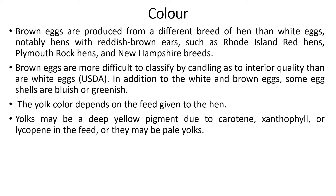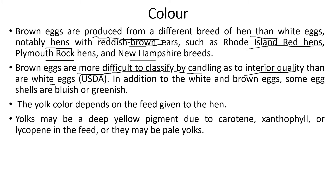Brown eggs are produced from breeds such as Rhode Island Red hens, Plymouth Rock hens, and New Hampshire breeds — notably hens with reddish-brown ears. Brown eggs are more difficult to classify by candling as to interior quality than white eggs. Candling is a process by which light is shone through the eggshell so that the contents can be assessed from outside without breaking the egg. In addition to white and brown, some eggshells are bluish or greenish, depending on the breed.